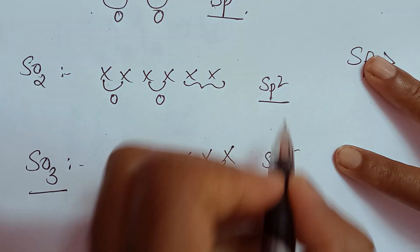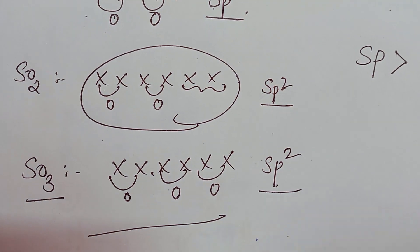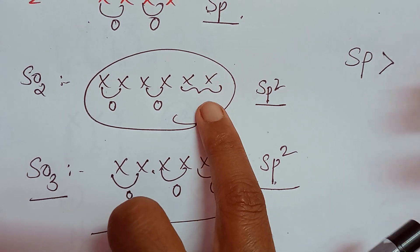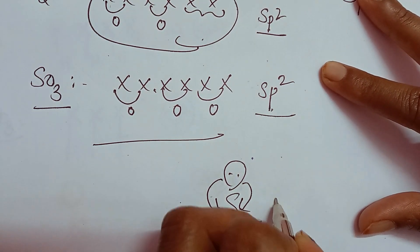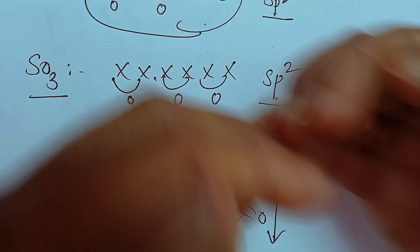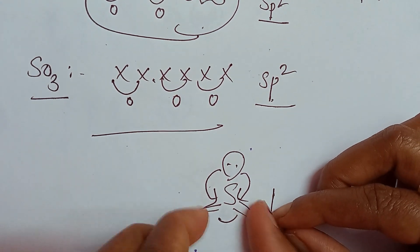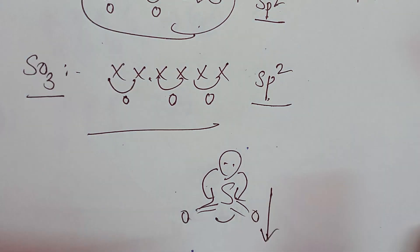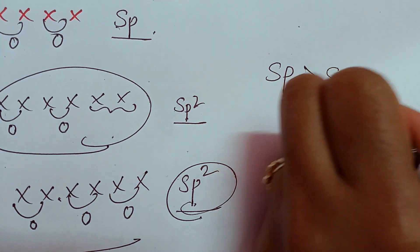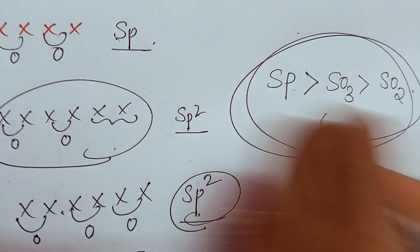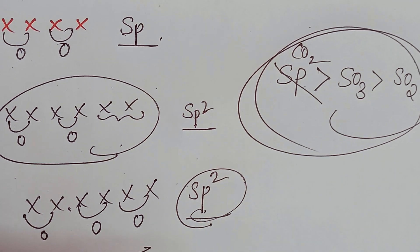Which has the greater bond angle? SP hybridization gives 180 degrees, so CO2 comes first. Then between SO2 and SO3 — both have SP2 hybridization. But SO3 has no lone pair while SO2 has a lone pair. As lone pairs increase, repulsion increases, so bond angle decreases. The molecule without a lone pair has the greater bond angle. So the correct order is CO2 > SO3 > SO2.